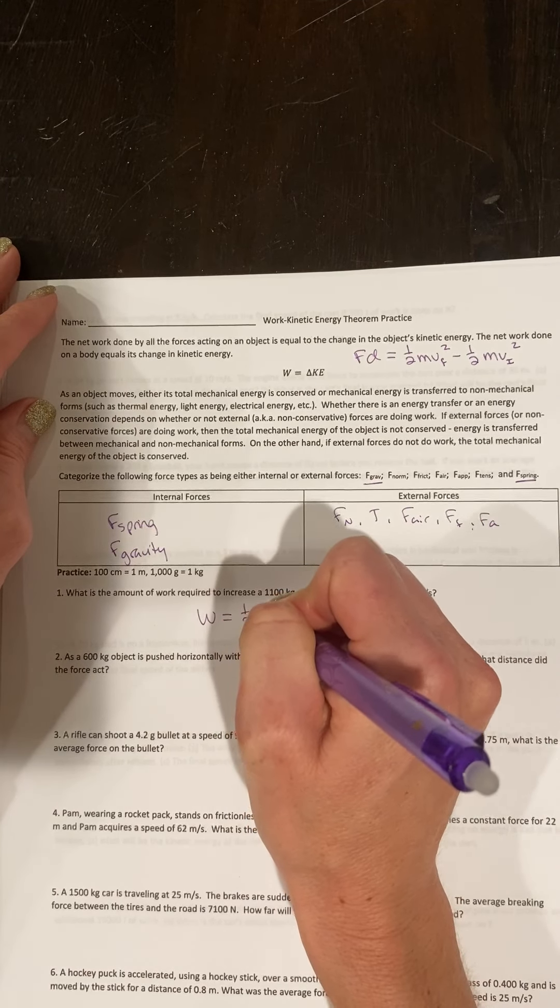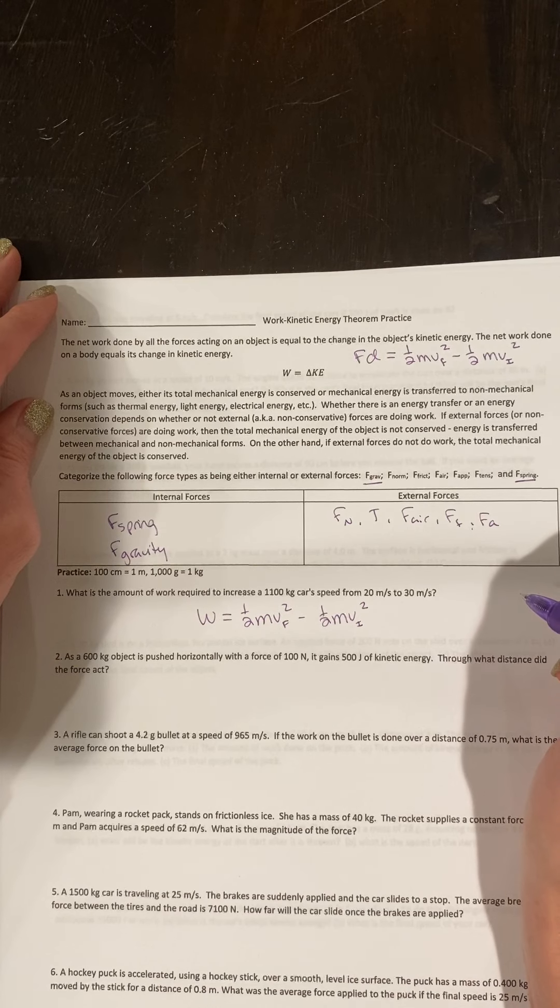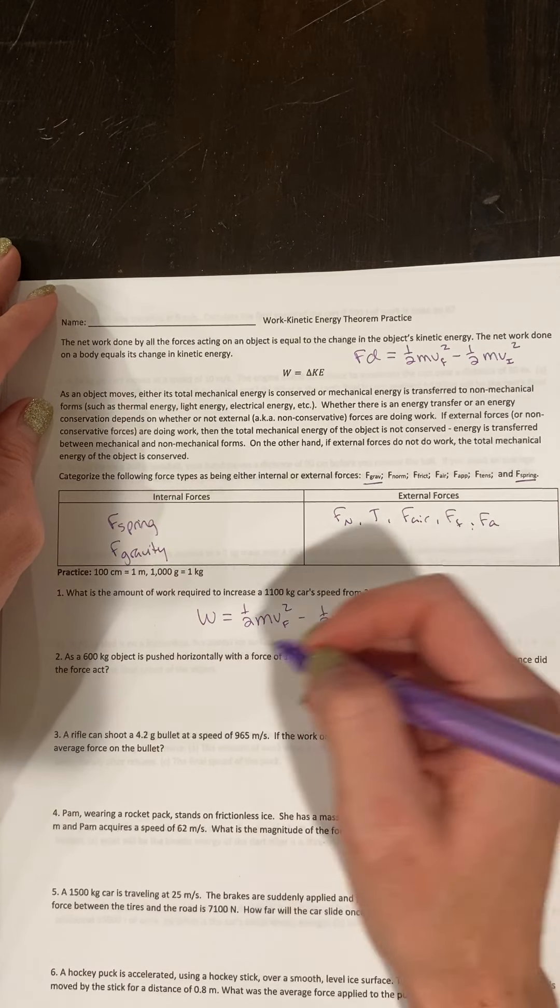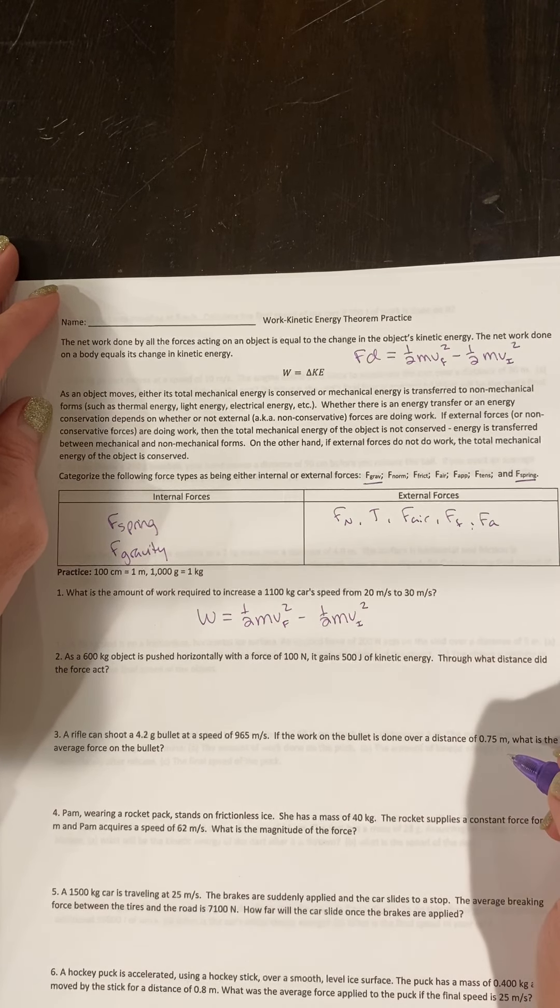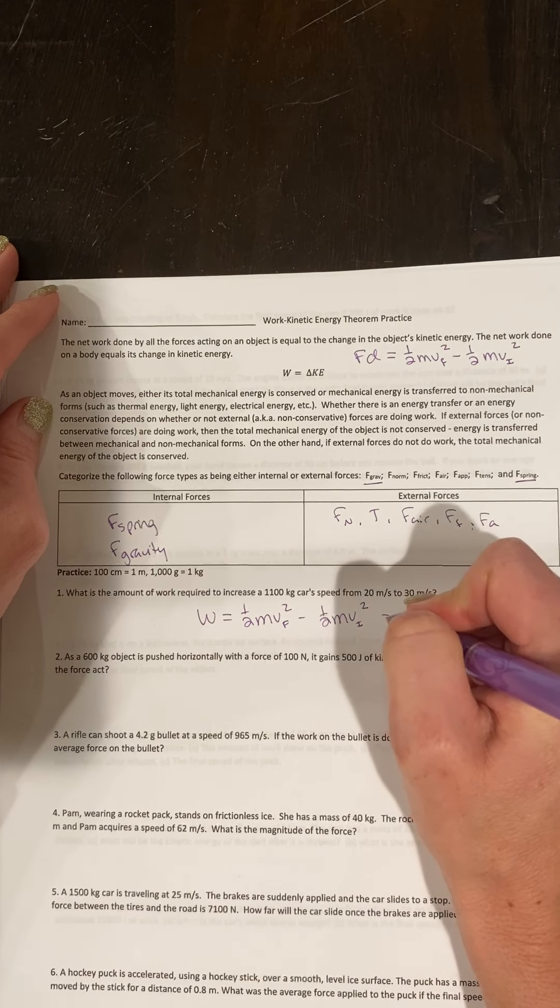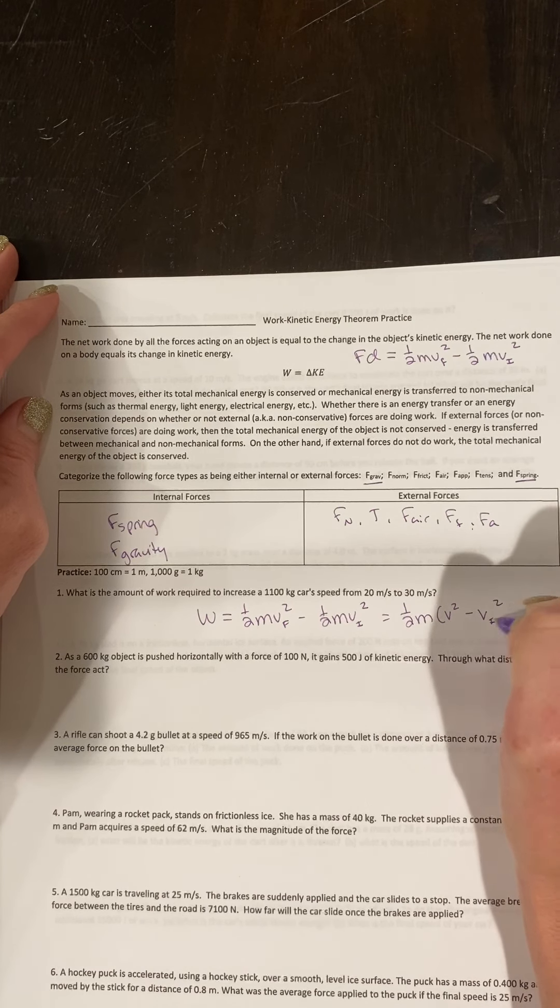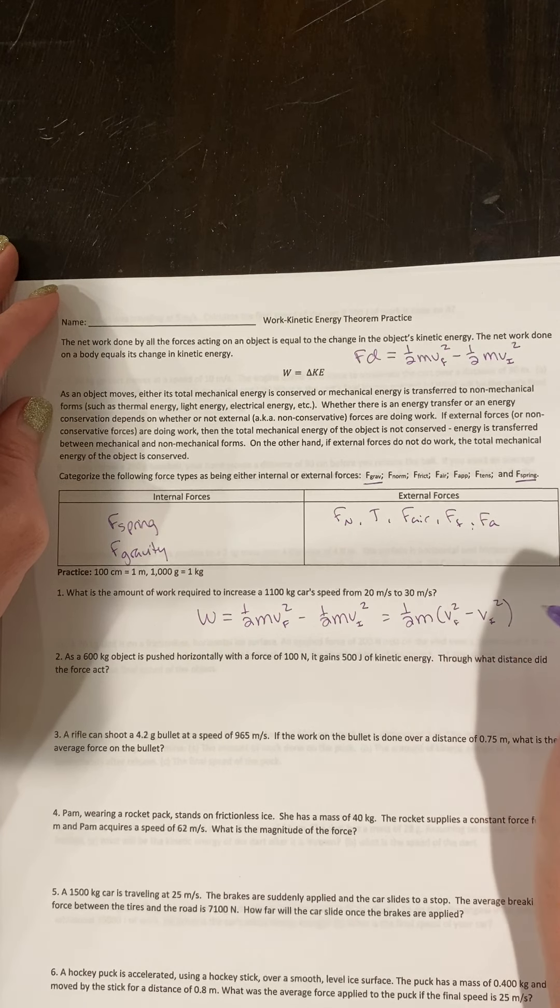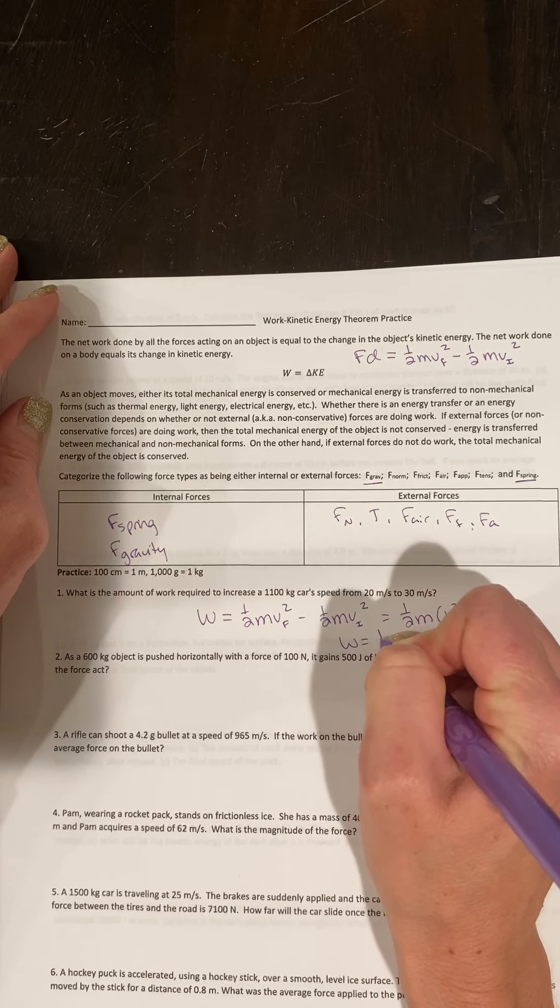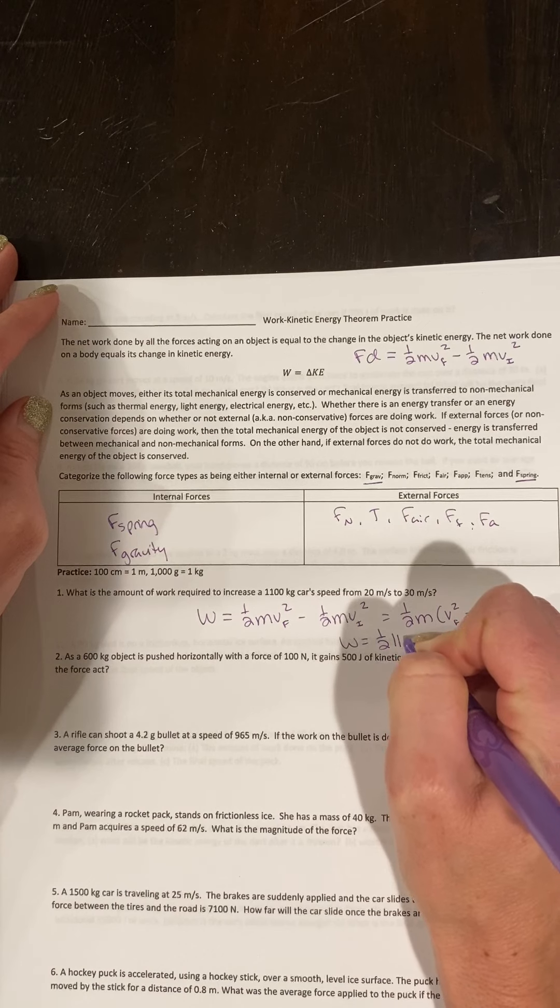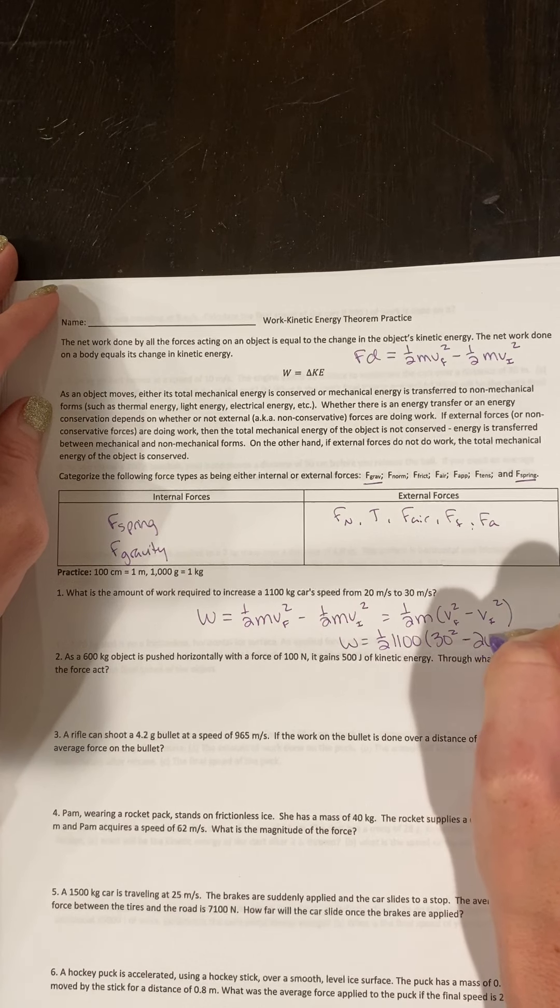You can't combine the velocities - you can't do final minus initial and then square it because it will change the order of operations. But I do believe you can do ½m(v_f² - v_i²). My work being done is going to be equal to my change in kinetic energy, which is ½(1100)(30² - 20²).